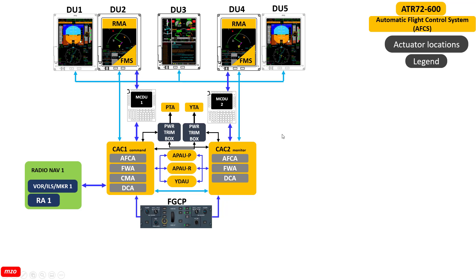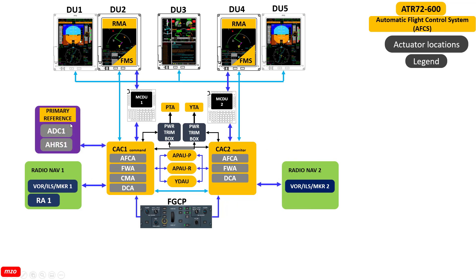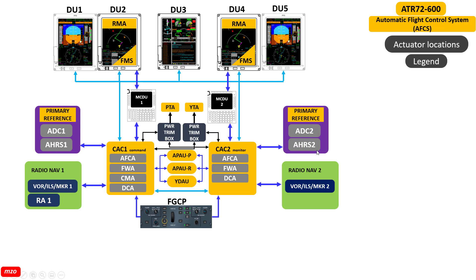This is for radio navigation. We have viewer 1, navigation 1, and navigation 2. This is the primary reference — our AirData computer and the ATU-3 reference system. AirData 1, AirData 2, ATU-3 reference system 1, and AHARS 2.